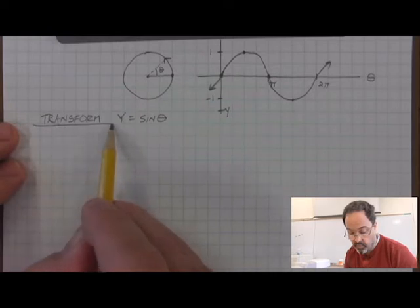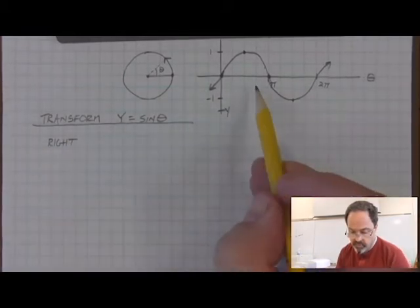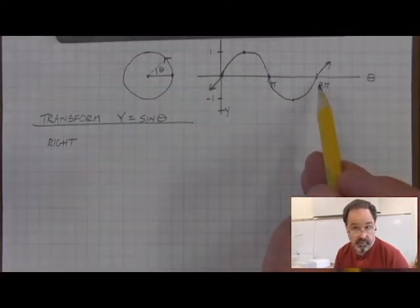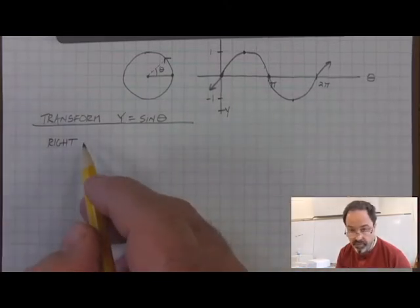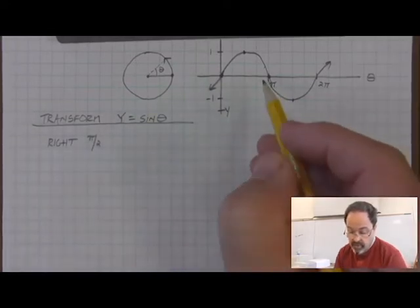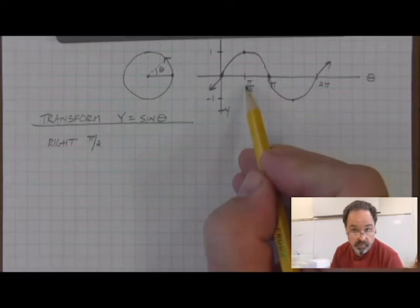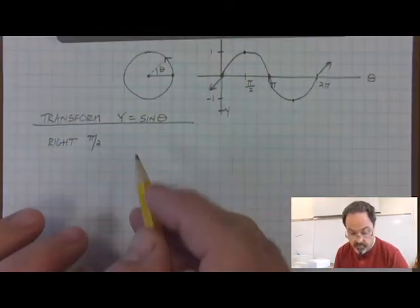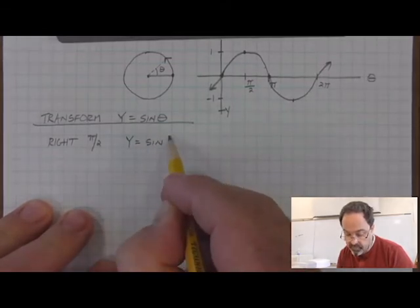We're going to transform the equation, and the ways in which we transform it will affect the graph and transform the graph. Let's remind ourselves of the different ways we can transform any function. One of the simplest transformations is to move right — imagine this entire sinusoidal wave moving to the right by a certain amount. Since we labeled our horizontal axis in radian measures, we're going to go right by a certain amount of radians. In this case, if we go right by pi over 2, we accomplish that the same way we'd transform any function because sine is a function.